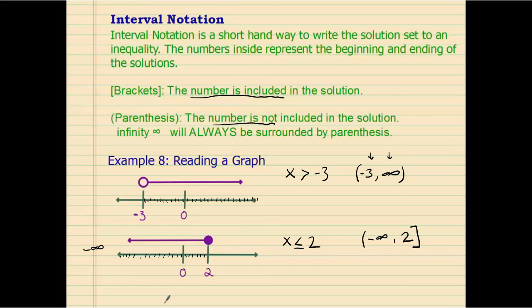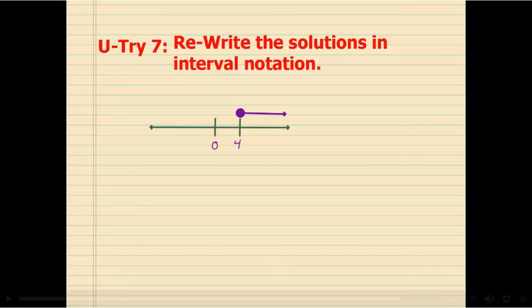When a number is not included in the solution set, we use an open circle and a parenthesis. When a number is included, we use a filled circle and square brackets to indicate. Here is your "you try."